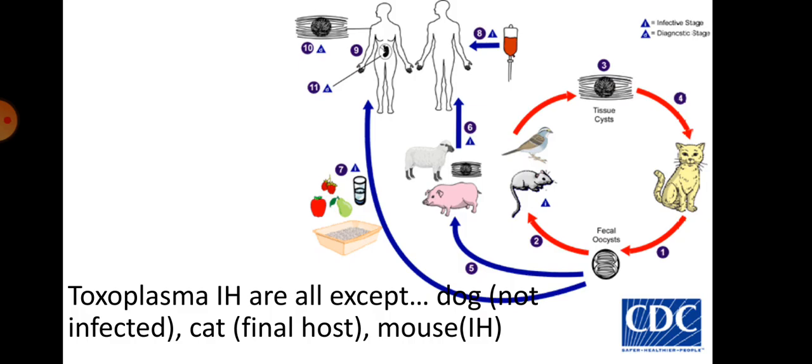Regarding Toxoplasma intermediate hosts — the question asks which is NOT an intermediate host. The cat is the final host for Toxoplasma, and the mouse is an intermediate host. The dog is neither the intermediate nor the final host — it is an accidental host. So the dog would be the correct answer for 'not an intermediate host.'